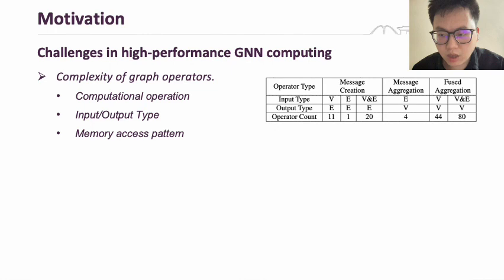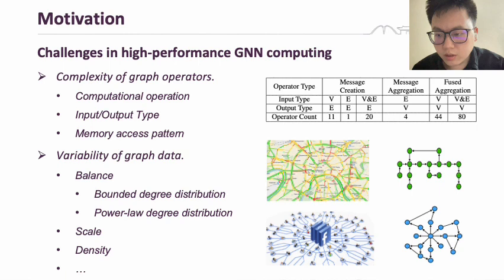However, real-world graph datasets can vary significantly in terms of balance, scale, density, and other factors. For example, micro-type graphs are usually more balanced, while social network graphs may have a power-law degree distribution, making it challenging to optimize.